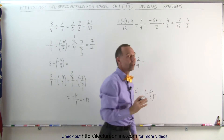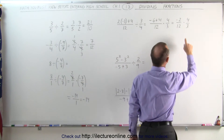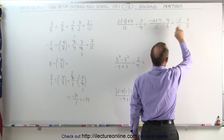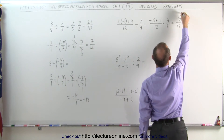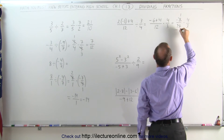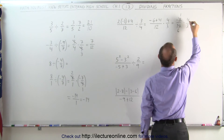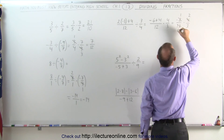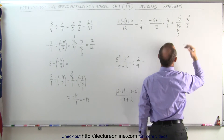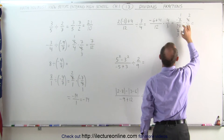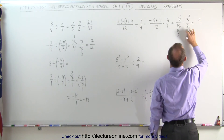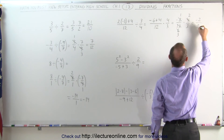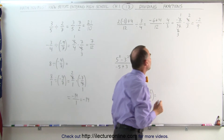Now we can go ahead and simplify, because all we have is multiplication — no addition or subtraction remains. The 2 and 12 simplify: 2 divided by 2 is 1, and 12 divided by 2 is 6. Then 4 and 6 simplify: 4 divided by 2 is 2, and 6 divided by 2 is 3. Now we multiply: negative 1 times 2 is negative 2, divided by 3 times 3, which is 9. The answer is negative 2 ninths.